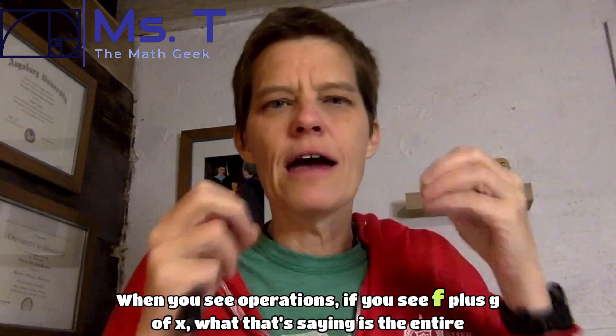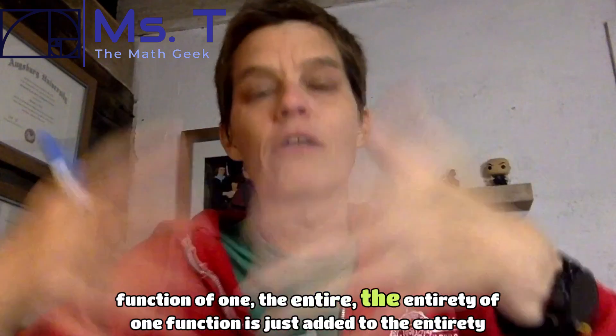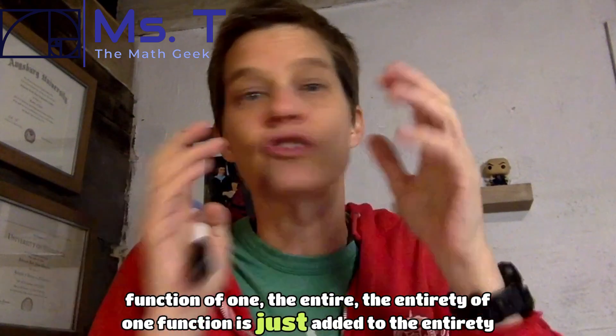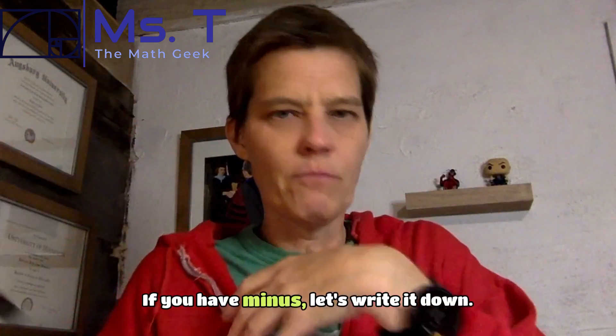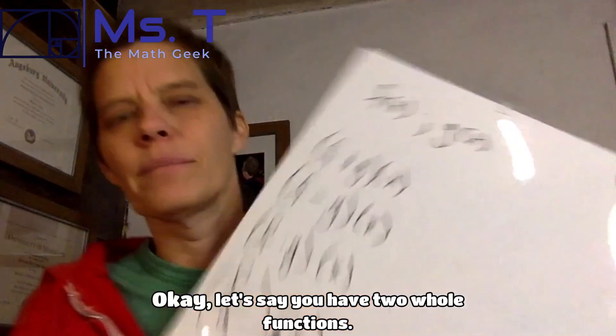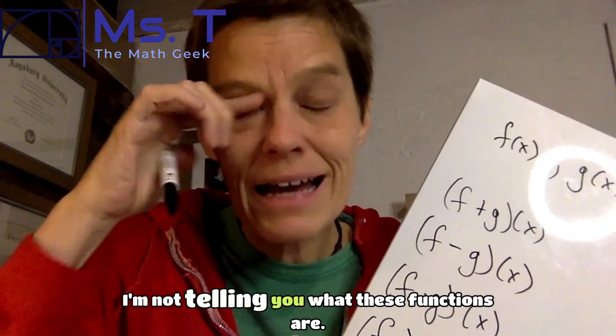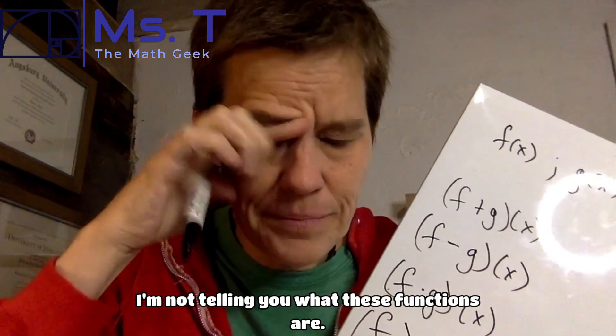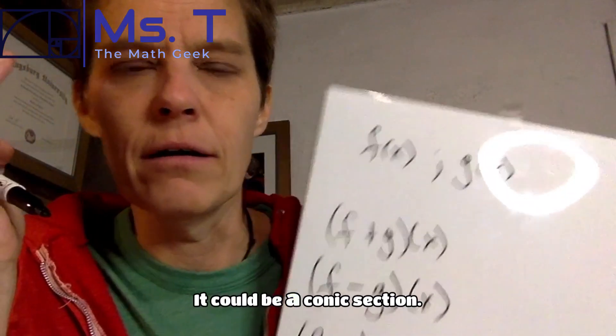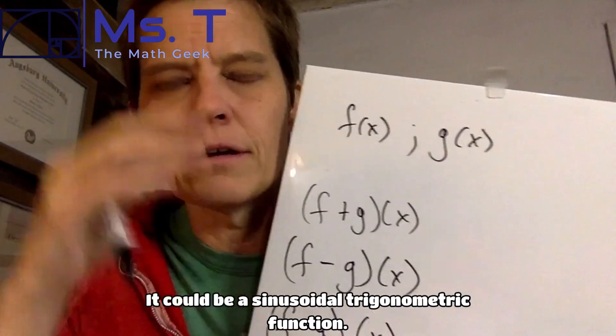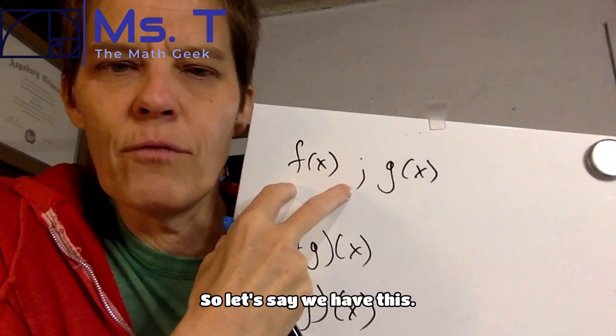And this will serve you as you go into calc and beyond. When you see operations, if you see f plus g of x, what that's saying is the entire function of one, the entirety of one function is just added to the entirety of a second function. If you have minus, well, let's write it down. Let's say you have two whole functions. This is a high-level overview. I'm not telling you what these functions are. A function is anything. It could be a line, it could be a conic section, it could be a sinusoidal trigonometric function.